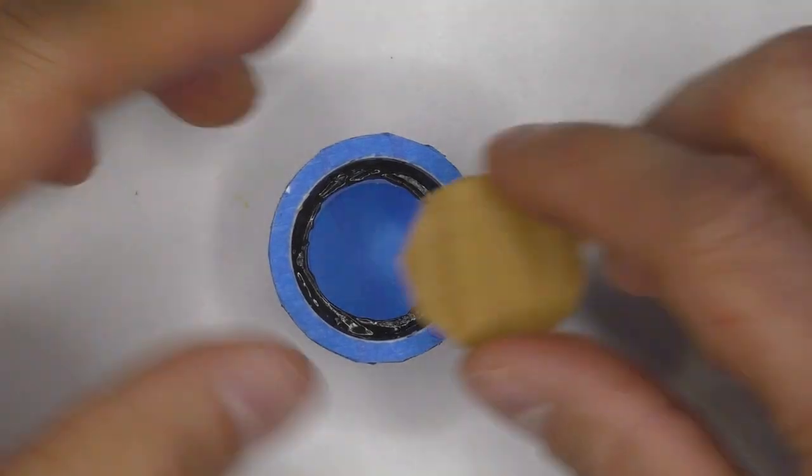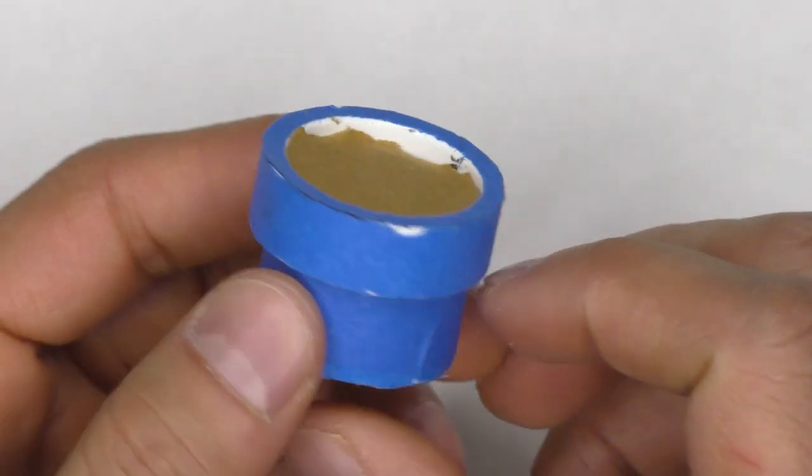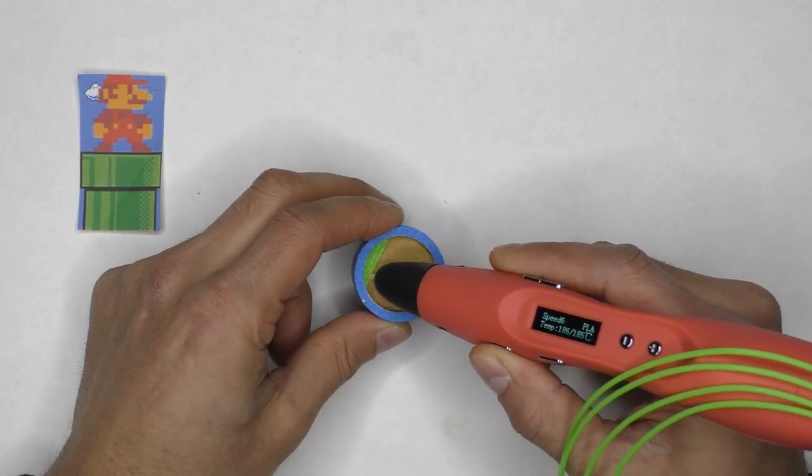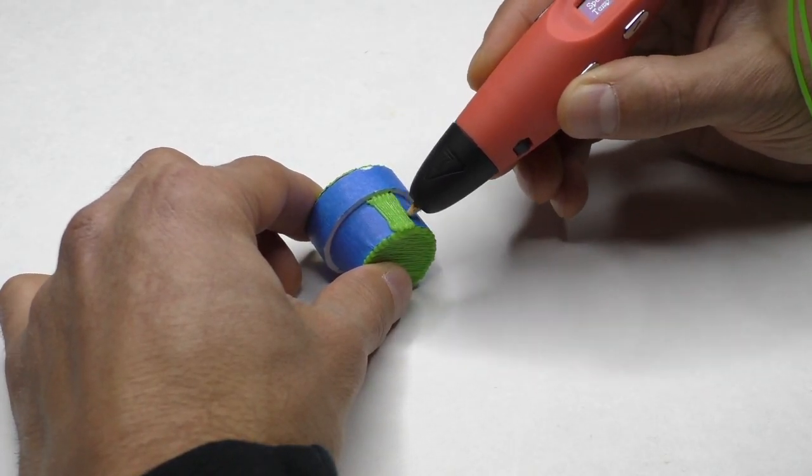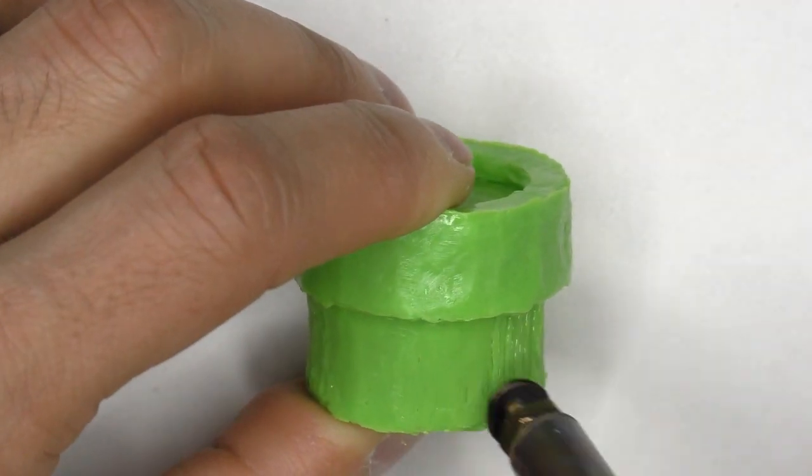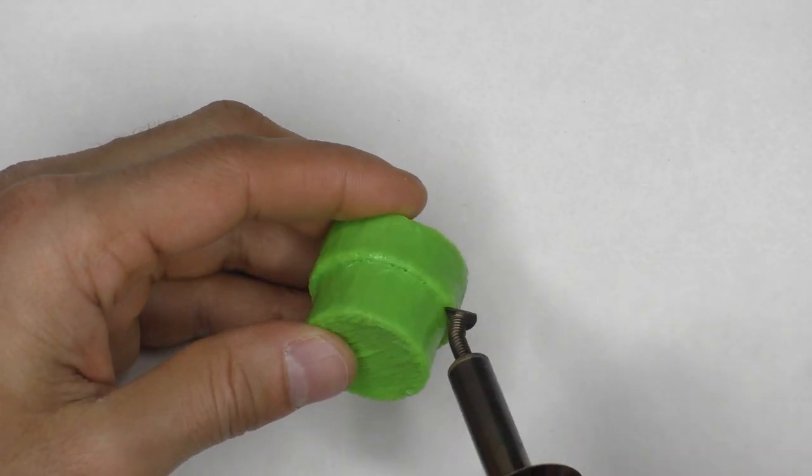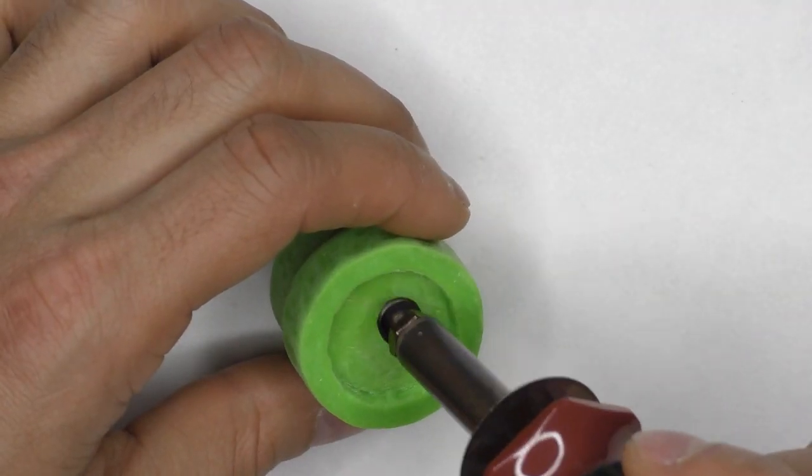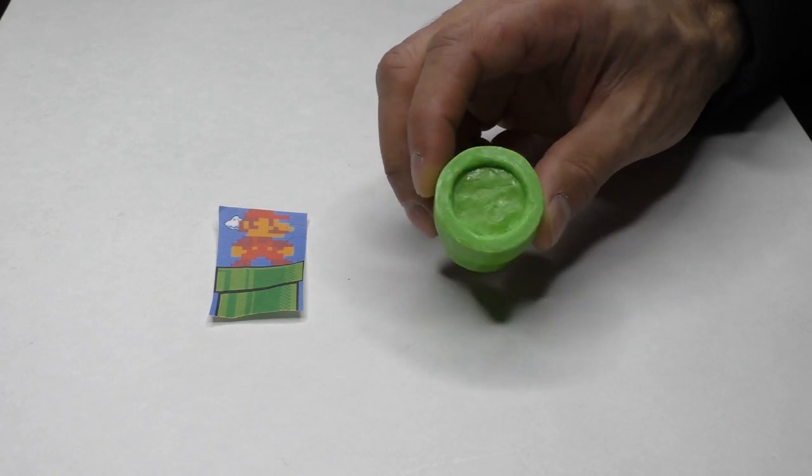Once we have our blue painters tape in place, we have to add a small platform for Mario to stand on. And I do that using cardboard. And there's the finished pipe. Let's now make Mario himself.